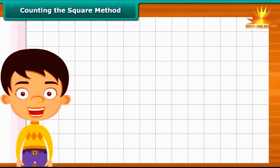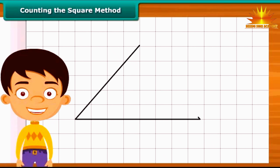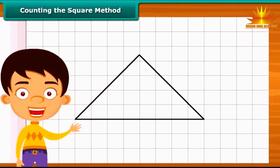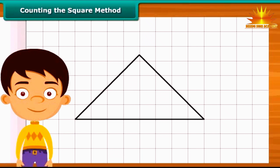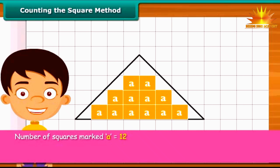Now let us calculate area with the help of a simple method. It is known as the counting the squares method. Draw the triangle on squared paper. Each square has a side of one centimeter. First, count the complete squares enclosed by the triangle and mark each of these squares as A. Then count the squares whose more than half part is enclosed by the triangle and mark these as B.